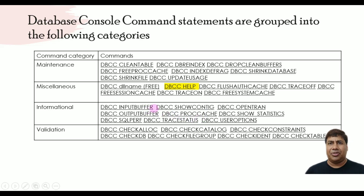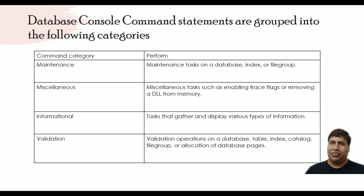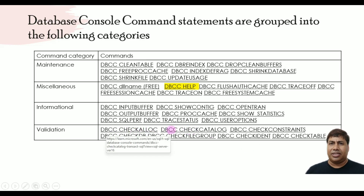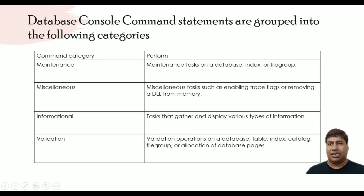Informational tasks gather and display various types of information — for example, DBCC INPUTBUFFER. Validation tasks perform validation processes for a database, table, index, catalog, or allocation of a database page — for example, one of the commands is DBCC CHECKALLOC.